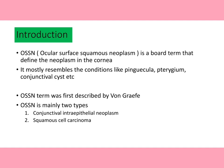OSSN mostly resembles conditions like pinguecula, pterygium, or conjunctival cyst. The term OSSN was first described by one researcher. Histopathologically, OSSN is mainly two types: conjunctival intraepithelial neoplasm and squamous cell carcinoma.